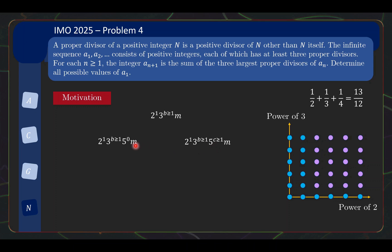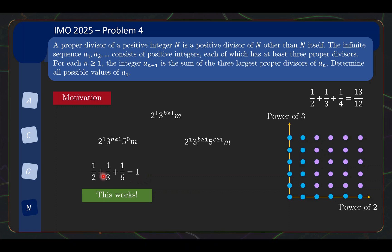If 5 is not a factor, the next smaller divisor after 3 is 6. In that case, the next term in the sequence is (1/2 + 1/3 + 1/6)·n = n itself. So you end up in a scenario where the sequence just repeats n, n, n, n — meaning this case works.